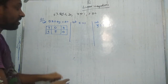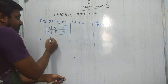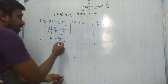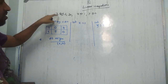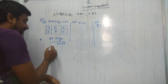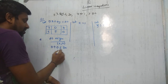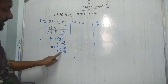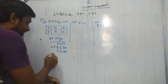For 5x + 4y ≤ 20: substitute (0,0) → 5(0) + 4(0) = 0 ≤ 20. Is 0 < 20? True. So we shade towards the origin. For x ≥ 1: substitute (0,0) → 0 ≥ 1. Is 0 greater than 1? False. So we shade away from the origin.